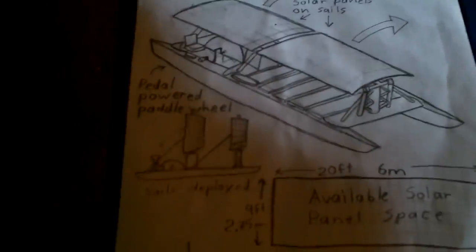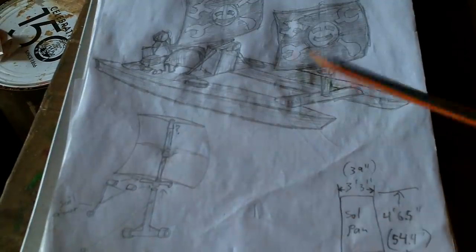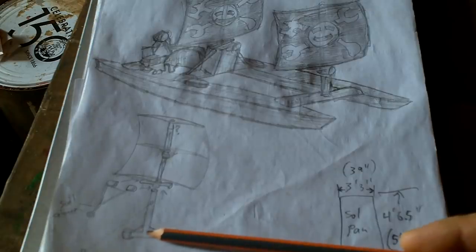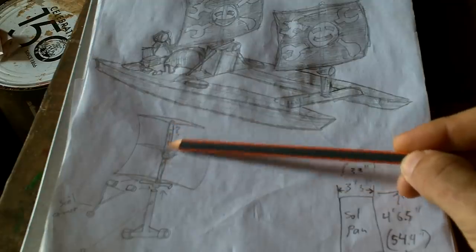I want to make these solar sails. This is the rough idea here, so this will be hinged at the bottom. It'll have a T that's really strong, so that's the mast, and then there'll be like a mast sleeve that slides over that.